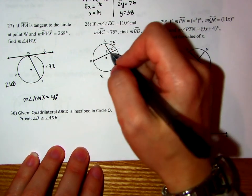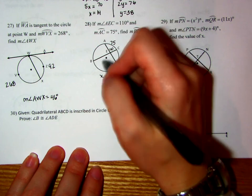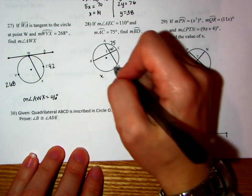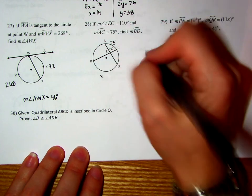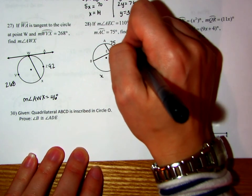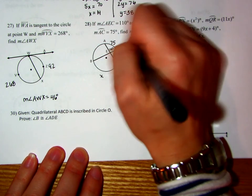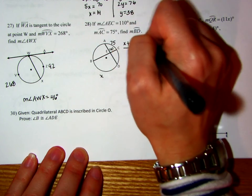Remember that if you have an angle inside but not at the center, it's going to be the average of the two arcs. So this arc plus this arc divided by 2 is equal to the angle. So let's set that up. The first arc plus the second arc divided by 2 is going to equal that angle.